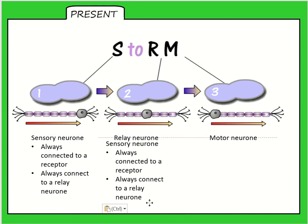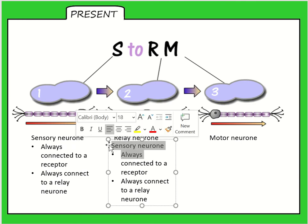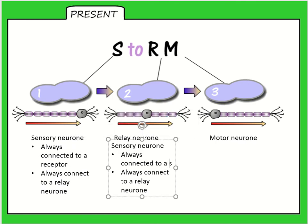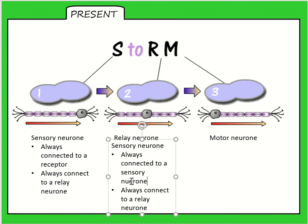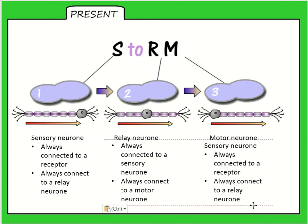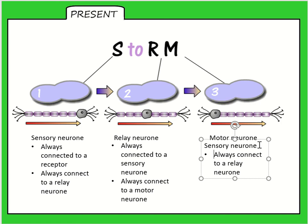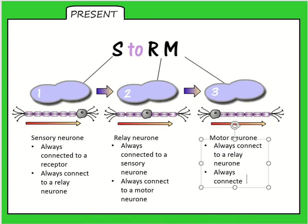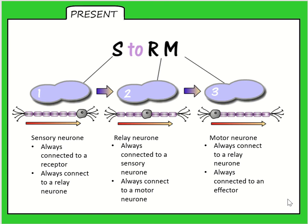The relay neuron is always connected to a sensory neuron and always connected to a motor neuron - sometimes called interneurons, so it connects the two together. Then a motor neuron is always connected to a relay neuron and always connected to an effector. So those are the three types of neurons you need to know - remember them by STORM - and those are the specific connections you need to know about each of them.